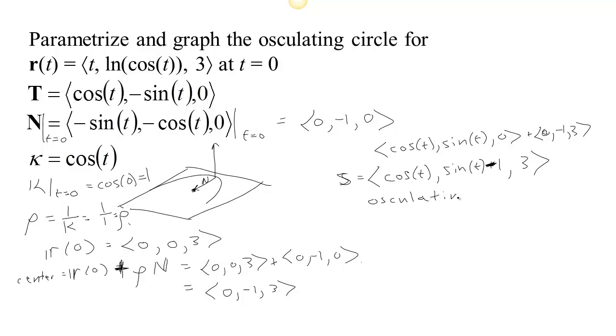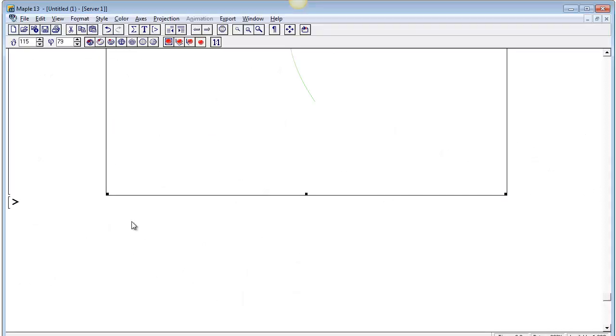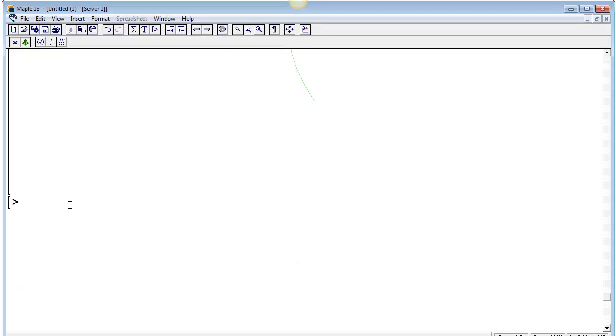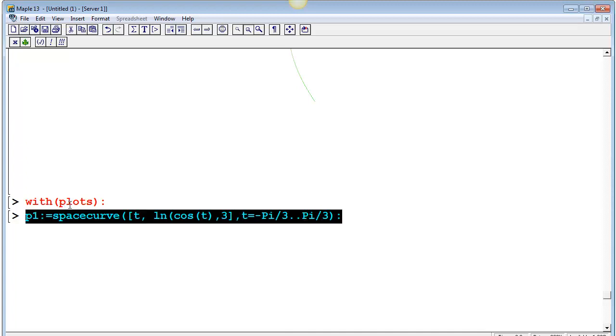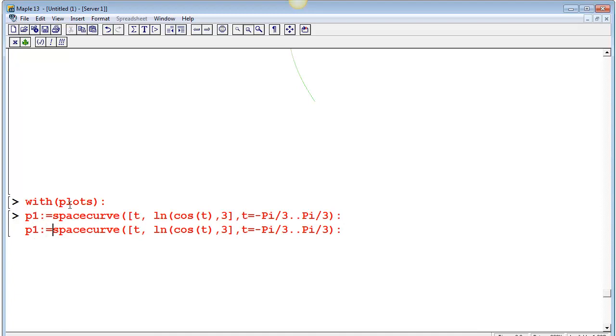So let's graph those two together now. So going over to Maple here, I've already got the plotting package loaded, but if it's not loaded, remember to load it. So with plots, and now our first plot can be the actual curve. And so that's the command to plot one of these is space curve. And to use space curve, you just give the parametrization for x, y, and z, and then give a range of times. And we could do t equals minus pi-thirds to pi-thirds.